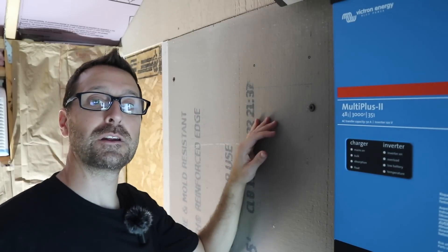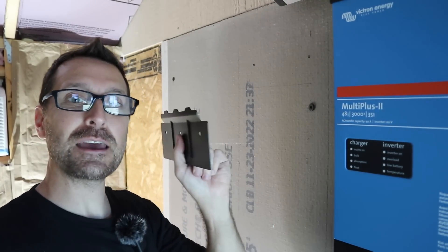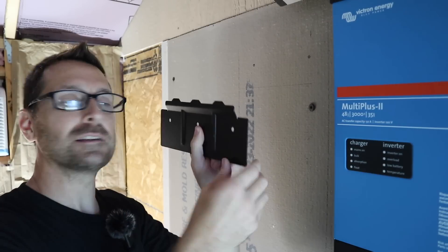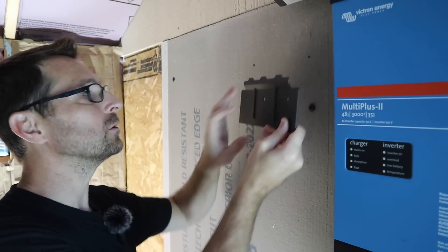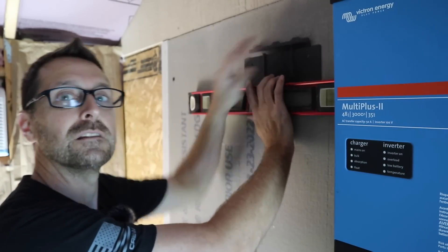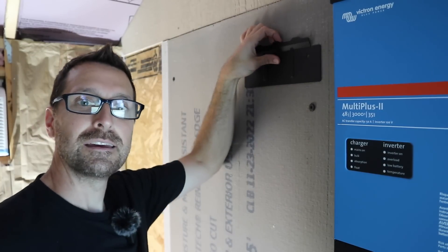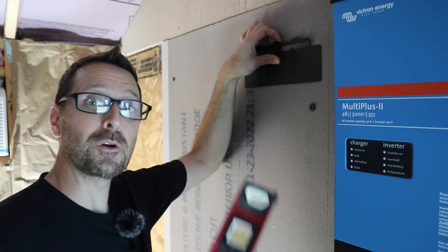We're going to mount our other Victron inverter. The beautiful thing about these Victron inverters is they have a mounting plate and the inverter just hooks on to the top. So all you need to do is mount this plate to the wall. It's really easy to level it and get it secured where you need it and just hook the inverter over the top.